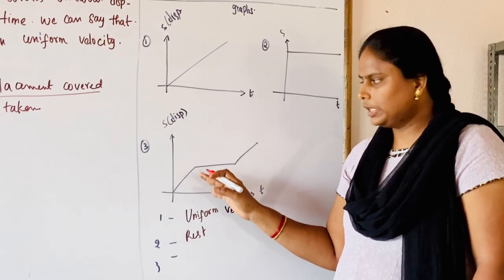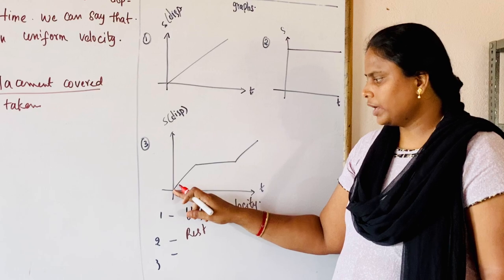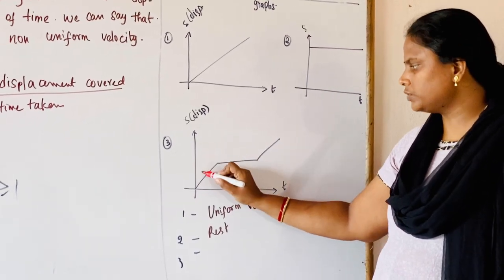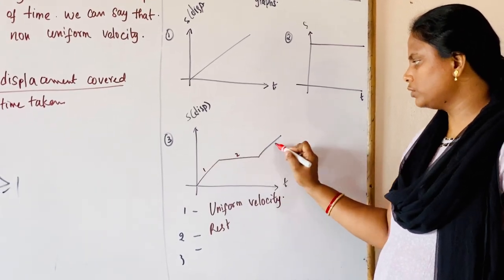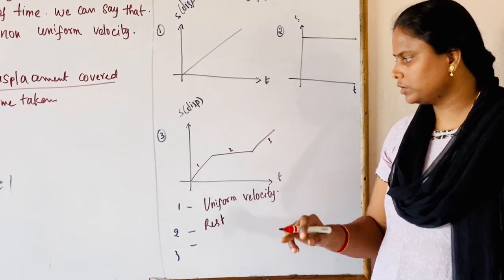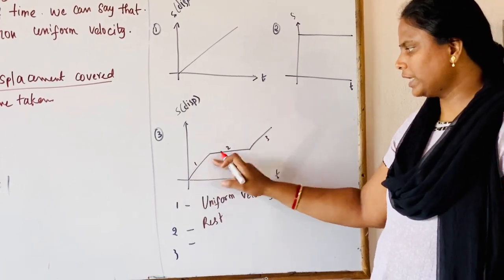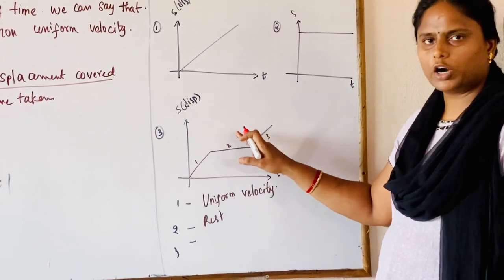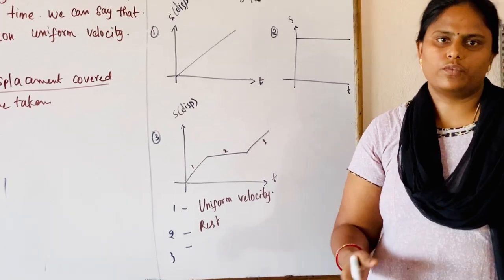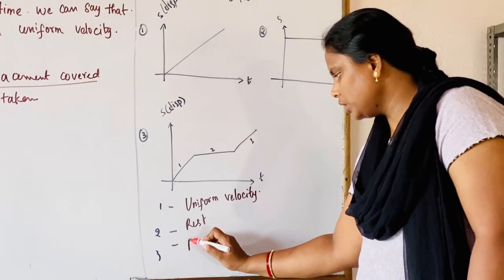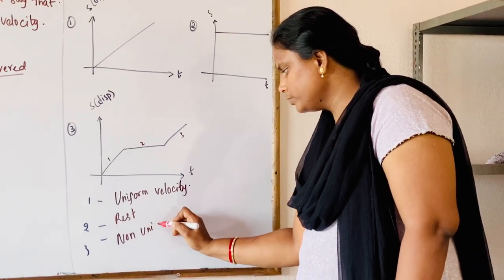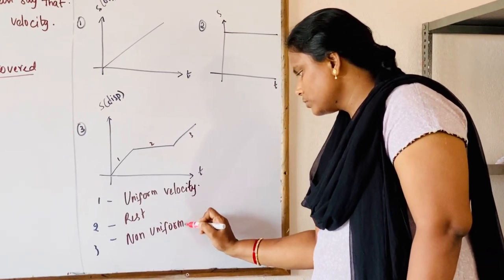In this third graph, we have different lines — three lines with different slopes. So we can say that the body is moving with non-uniform velocity.